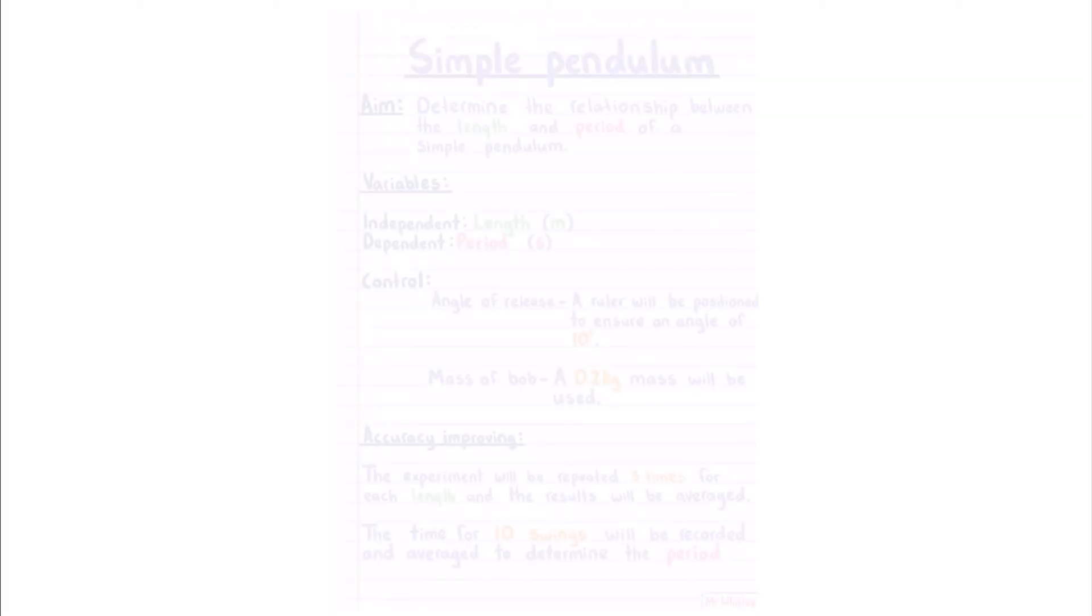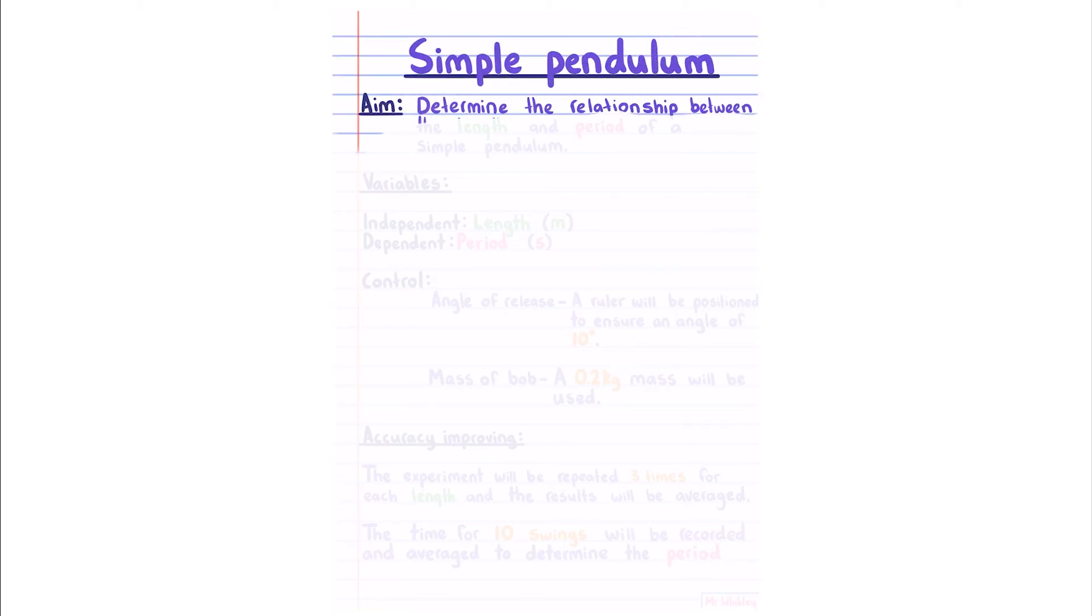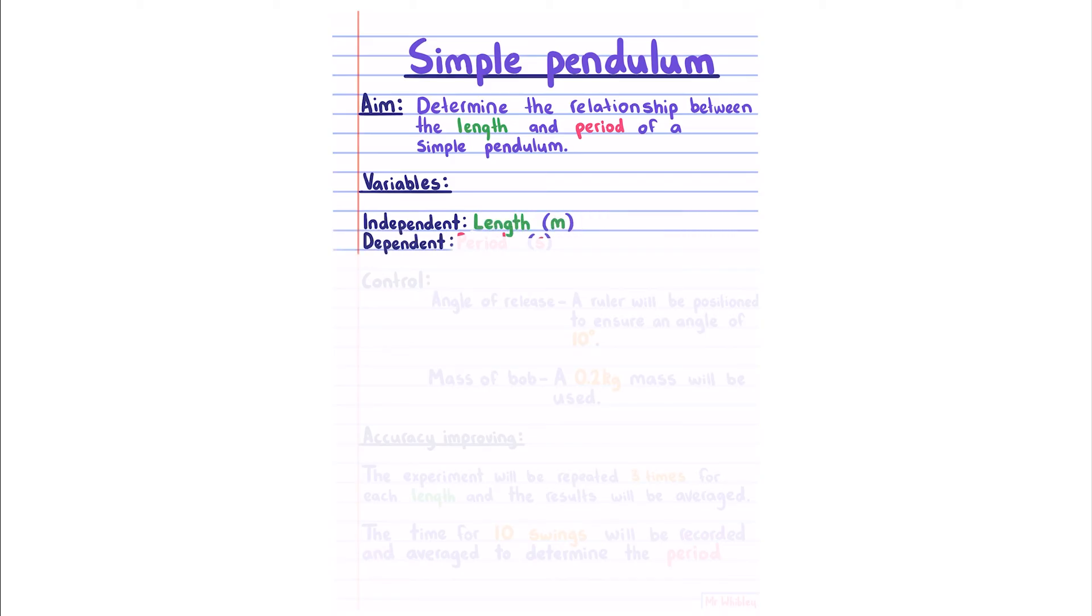In this section, I'm going to go through an exemplar, though as stated before, the assessments can differ between schools, and so your teacher's advice should take priority. In this exemplar, we're going to look at the simple pendulum. Our aim is to determine the relationship between the length and period of a simple pendulum. For our variables, our independent variable, which is the one that we determine ahead of time, is the length of our pendulum, and our dependent, which is the one we're measuring, is our period.